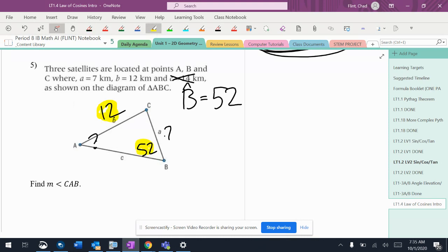So I got a yellow one, and a yellow one, and a green one, and a green one. So I'm side over sine of angle opposite it equals side over sine of angle opposite it.